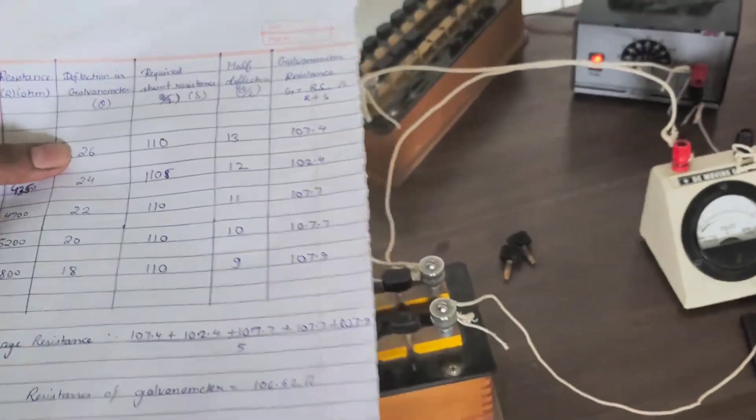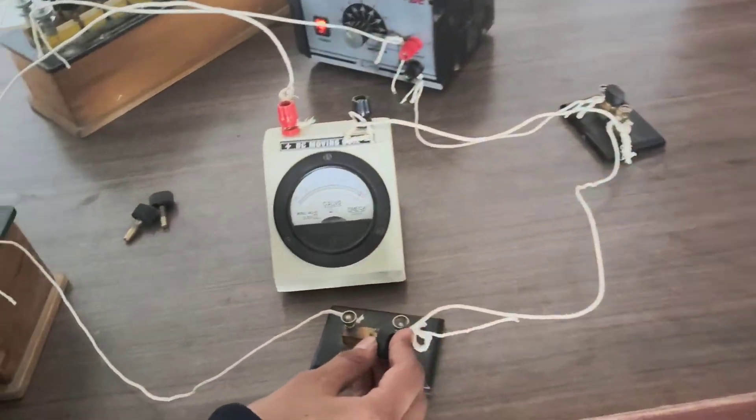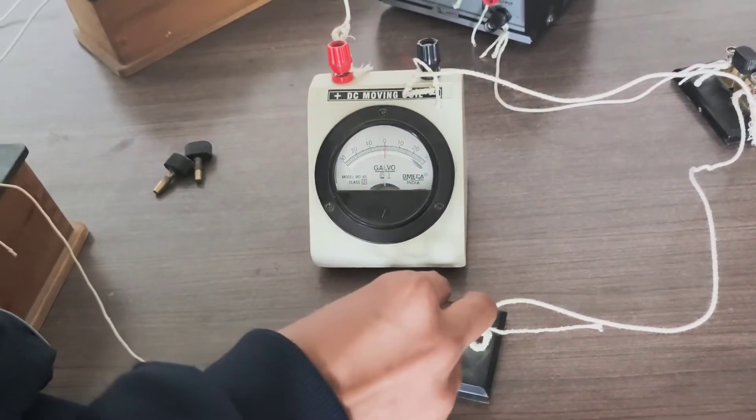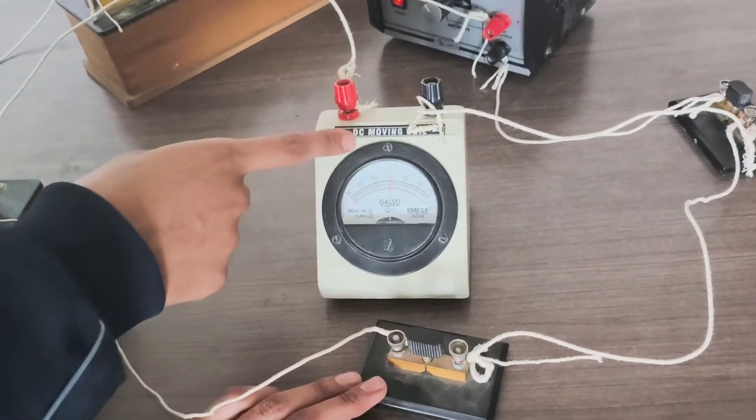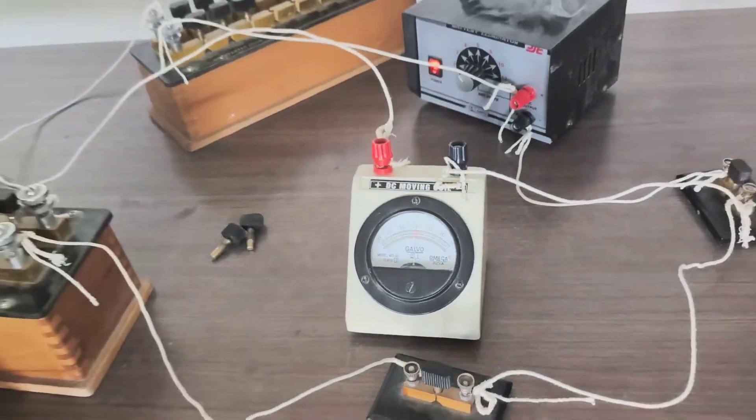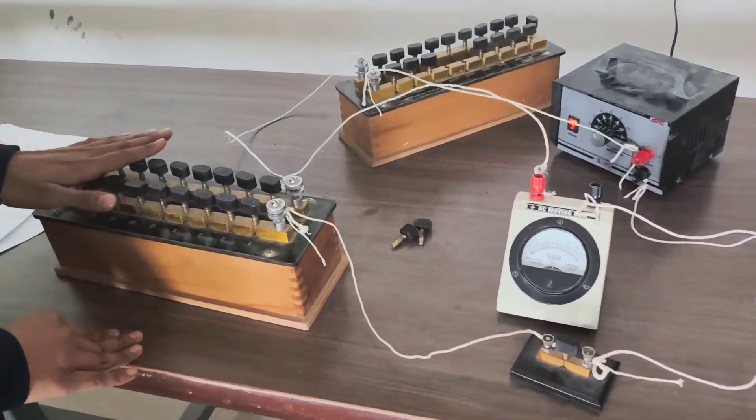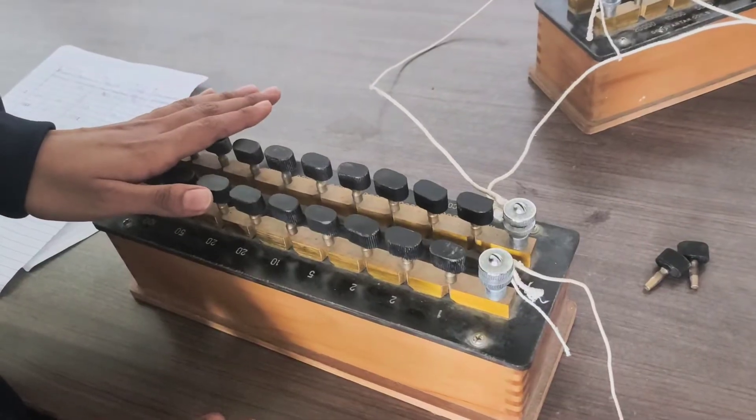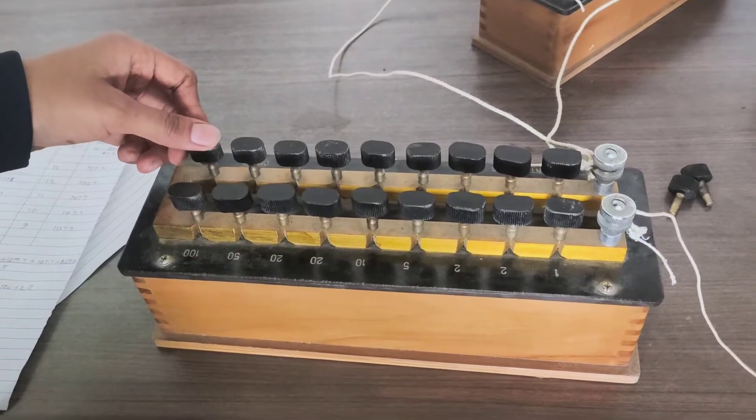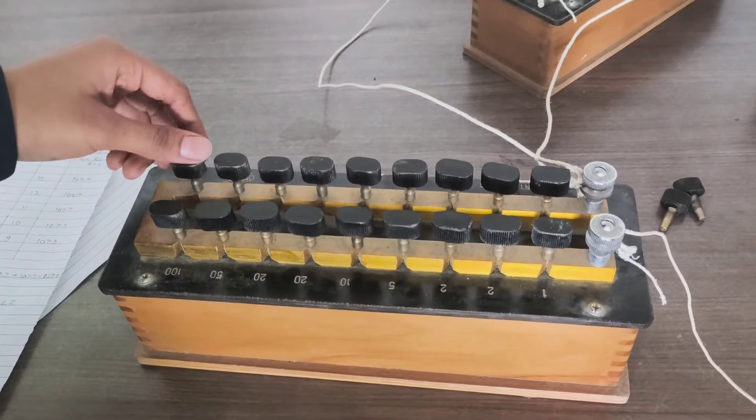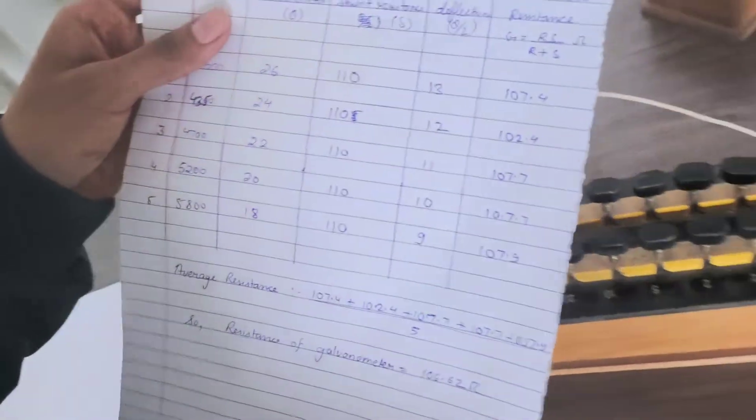Now we have to connect key 2. Here you can see the pointer is pointing towards 0. Now we have to remove the resistance from the shunt resistance in such a way that the reading or the deflection becomes half of the previous one, that it should be like 13.